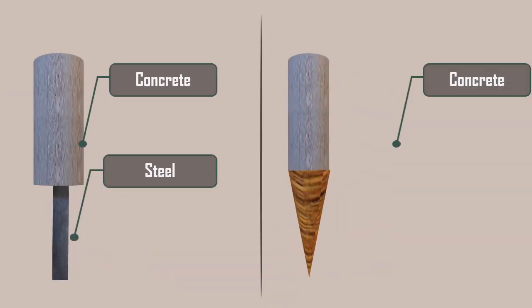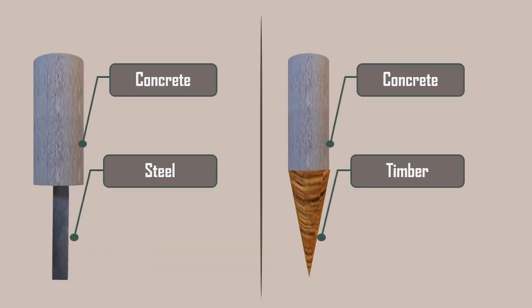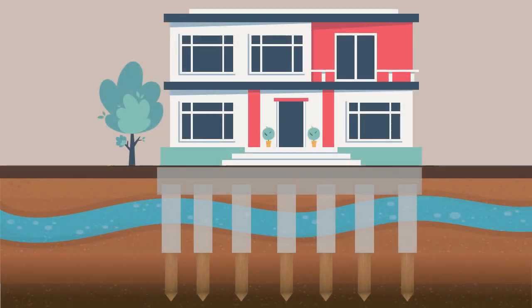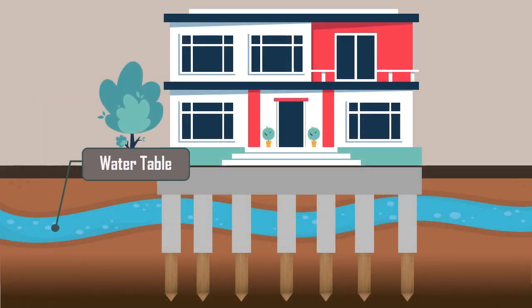Composite piles are made up of two or more sections of different materials. The typical combination includes where the upper part of the pile is projected above the water table.